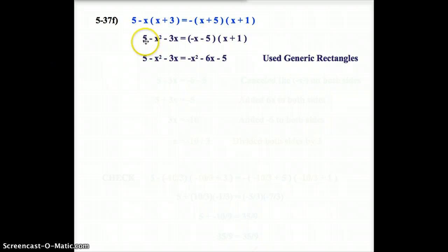we have 5. This 5 stays the same. Minus x squared minus 3x. So, negative x times x is negative x squared. Negative x times 3 is negative 3x.